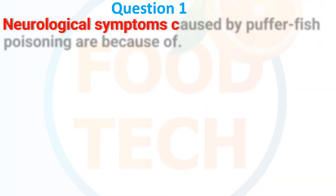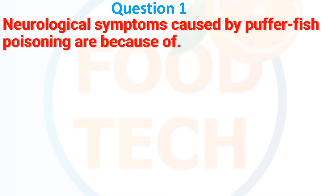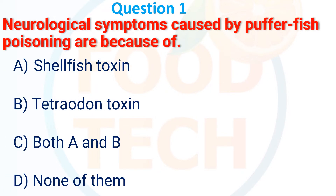Neurological symptoms caused by puffer fish poisoning are because of: A, a shellfish toxin; B, tetrodotoxin; C, both A and B; D, none of them. The answer is B, tetrodotoxin.